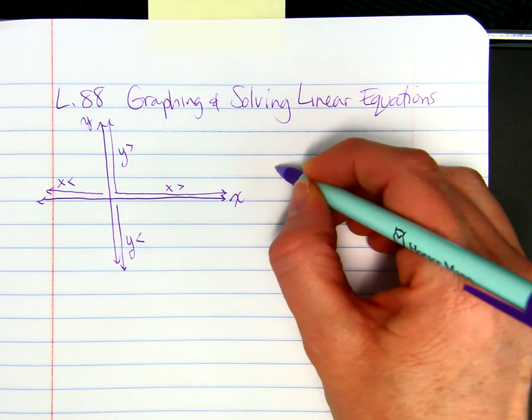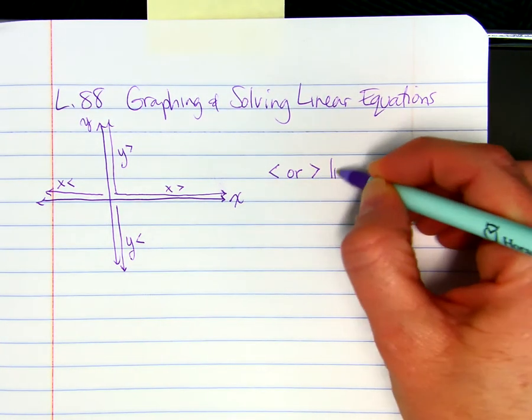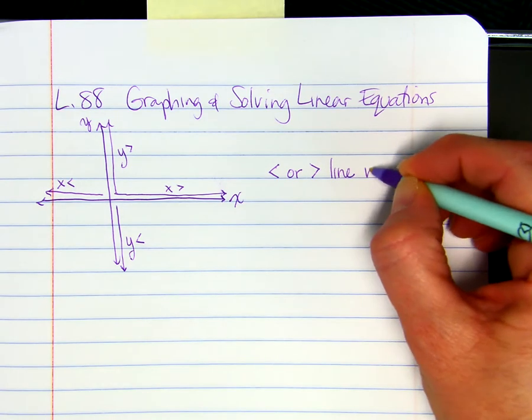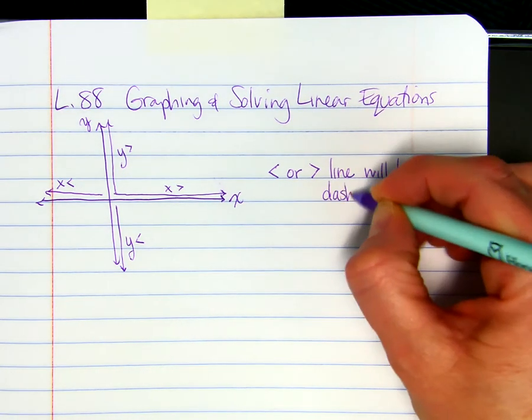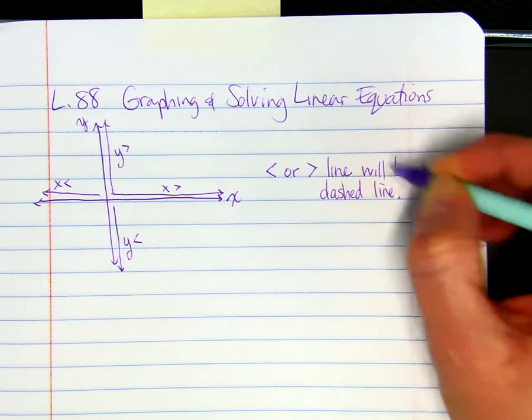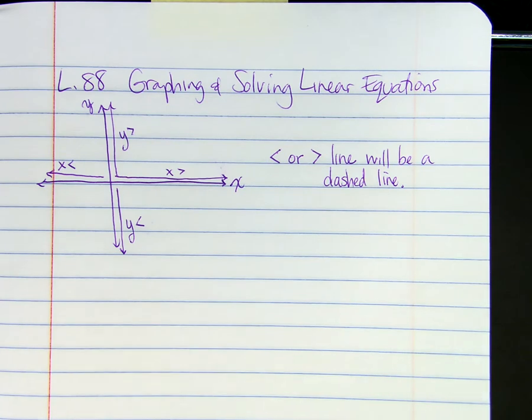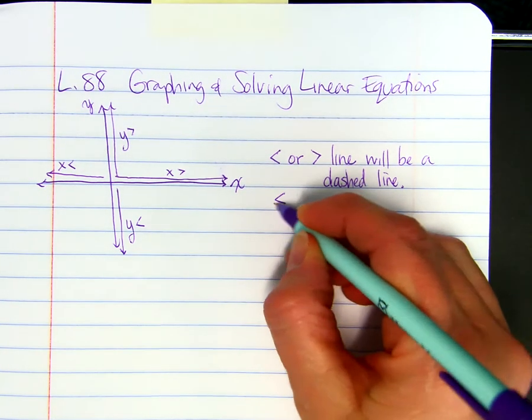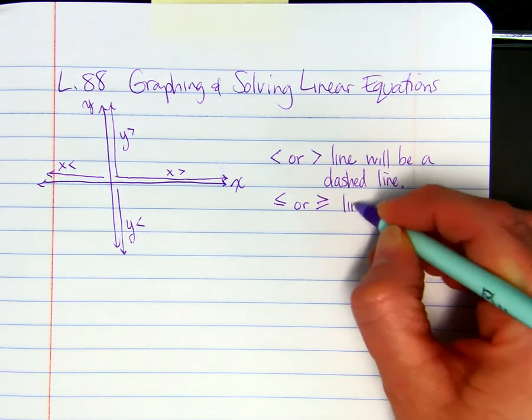So if you have a less than or greater than sign, the line that you graph will be a dashed line. It will not be solid. It's like an open circle when you're doing on a number line. If you have a less than or equal to, or greater than or equal to, the line will be solid.